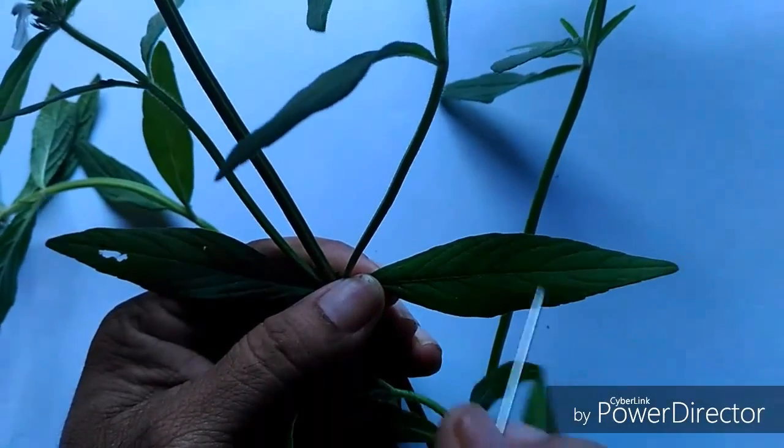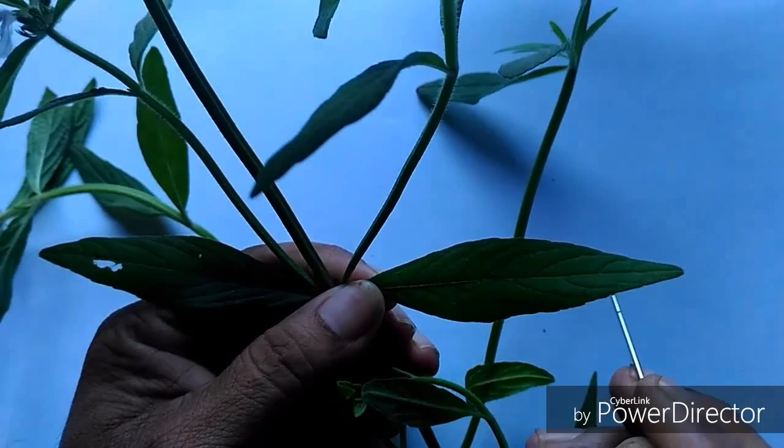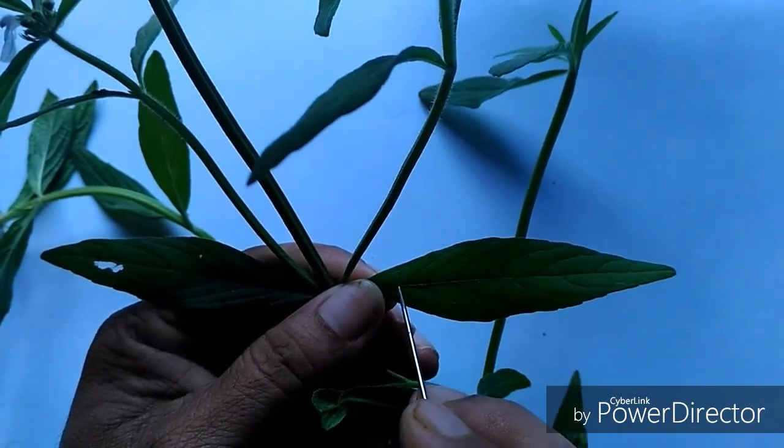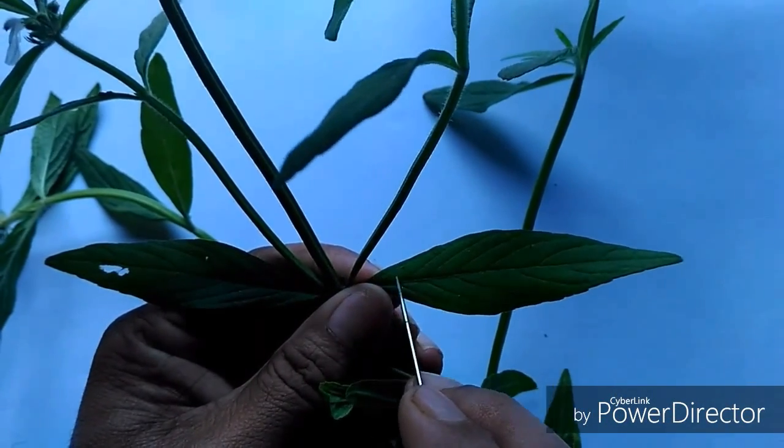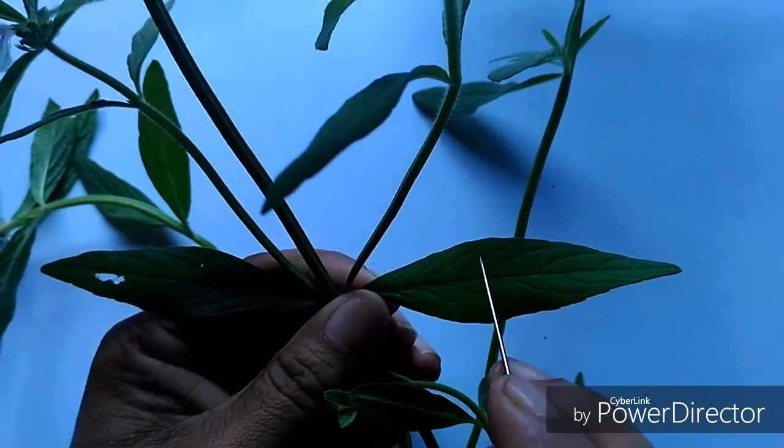Why is it lanceolate? Because it appears as like as a lance. And why is it oblong? Because the length of the leaf is longer than the breadth.